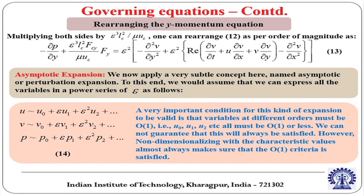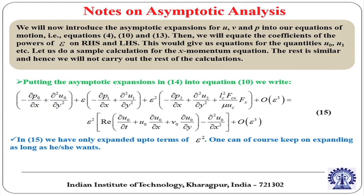We cannot guarantee this is always satisfied because we are unsure about certain scales. We have selected u as the dimensional u by Uc, but we do not know what Uc is. So how can we ensure that u by Uc is of the order of 1? That is our hope. If that hope does not work then the individual dimensionless parameters are not of the order of unity and this method will not work. Choice of the scale is something which is very important. However, if suitable characteristic values can be found, non-dimensionalizing with them almost always ensures the order-of-1 criteria is satisfied.